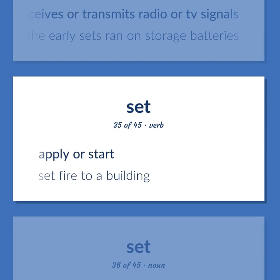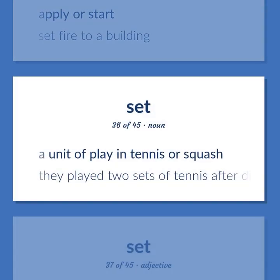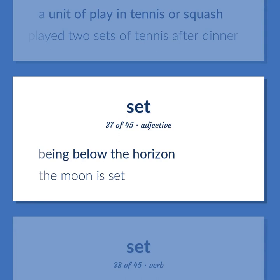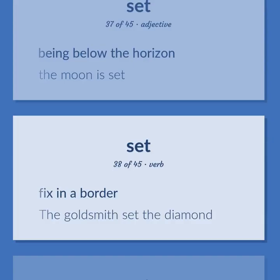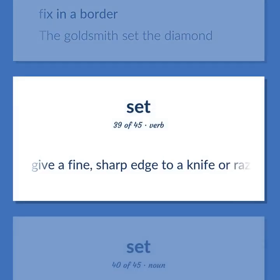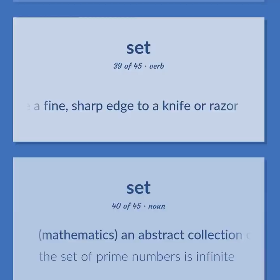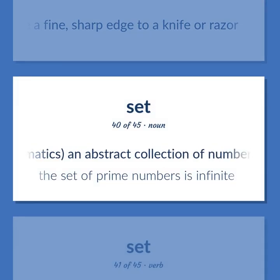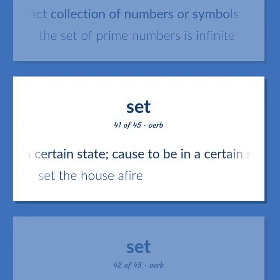Set: A unit of play in tennis or squash. They played two sets of tennis after dinner. Being below the horizon. The moon is set. Fix in a border. The goldsmith set the diamond. Give a fine, sharp edge to a knife or razor. Mathematics: an abstract collection of numbers or symbols. The set of prime numbers is infinite. Put into a certain state; cause to be in a certain state. Set the house afire.